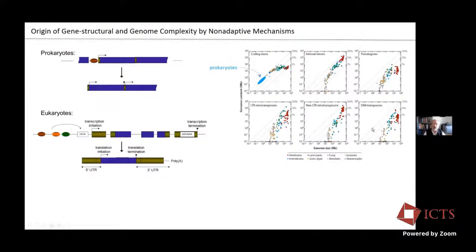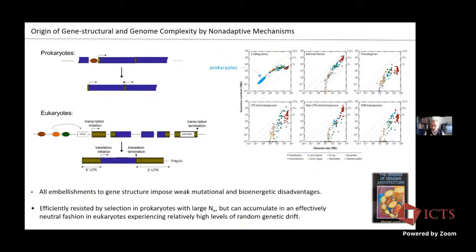So prokaryotes not only have streamlined gene structure but streamlined genomes. The problem here is that any embellishment that you make to gene structure or genome imposes weak mutational and bioenergetic disadvantages. You make a gene more complex, you've introduced more ways to break the gene. It costs energy to make more DNA, more RNA. So there's a cost at the bioenergetic level as well. So apparently prokaryotes can resist these kinds of embellishments in the accumulation of exogenous DNA because they have large effective population sizes. But this sort of thing accumulates just passively in the very large genomes of eukaryotic species, especially multicellular species with very low effective population sizes.